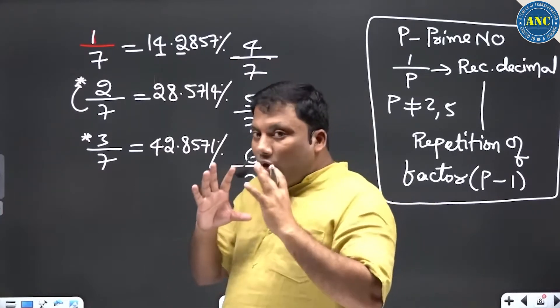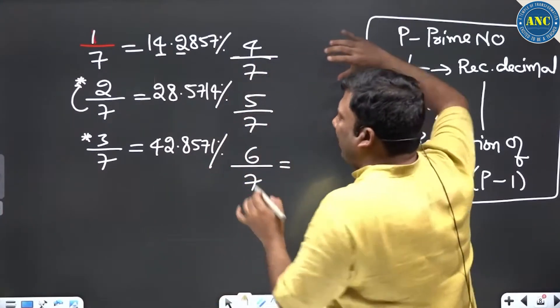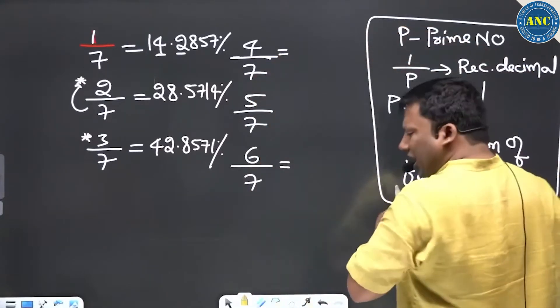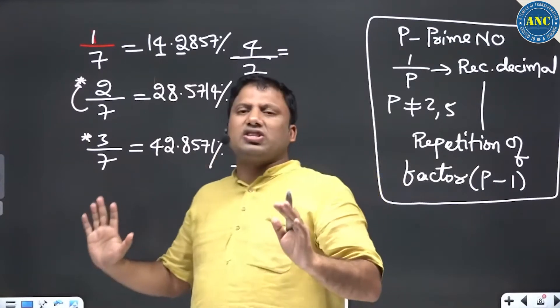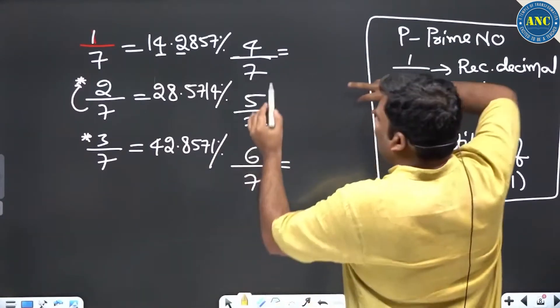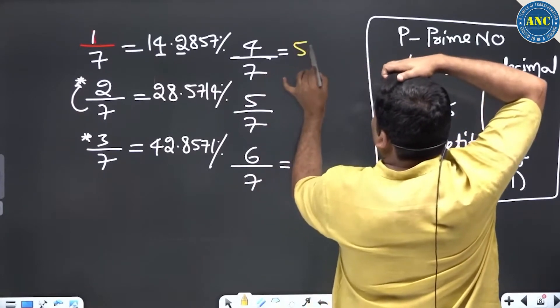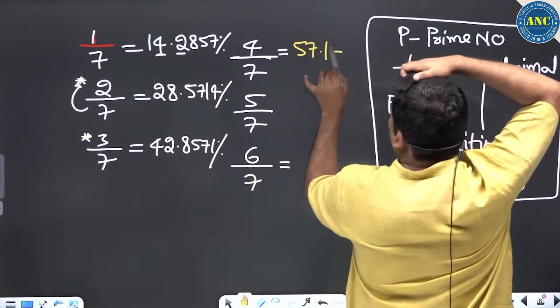4/7 - not only DXC company, any other companies, these sessions will be extremely useful. 4 tens are 40, 7 goes 5 times. 5 and the next digit: 57.1428.